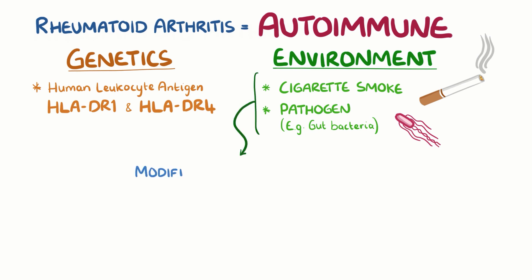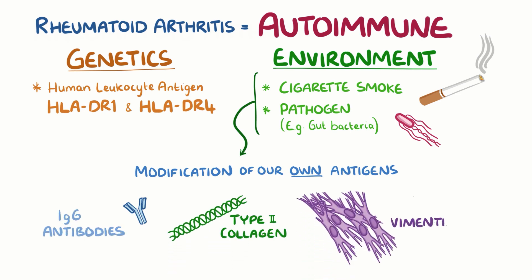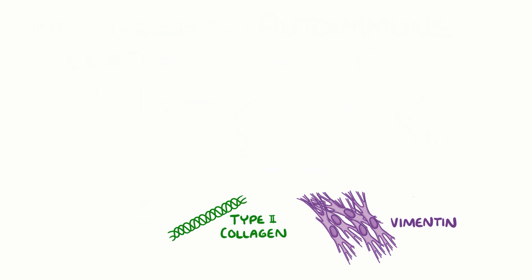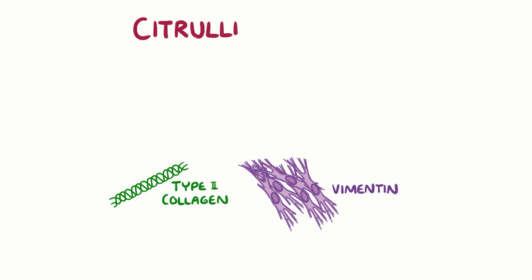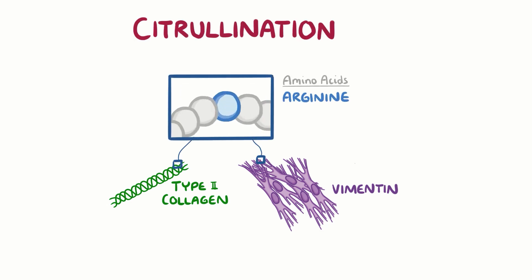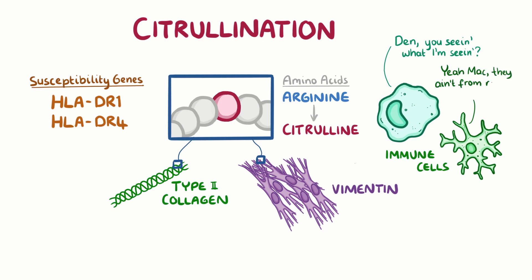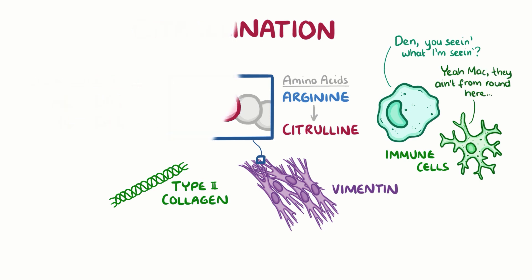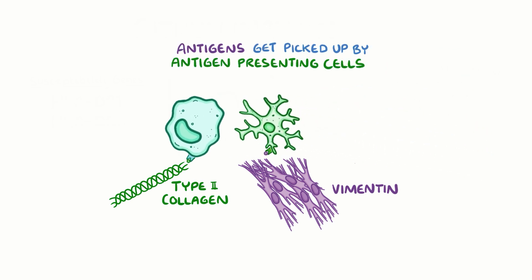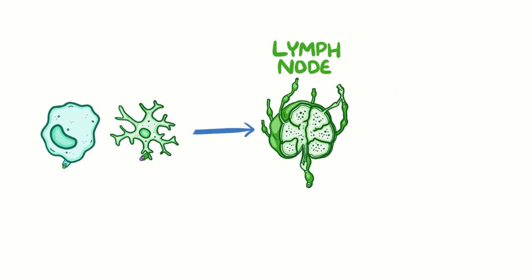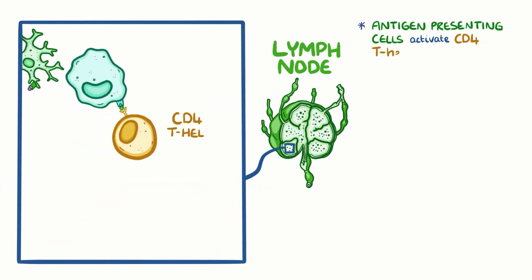These environmental factors can cause modification of our own antigens, such as IgG antibodies or other proteins like type 2 collagen or vimentin. Type 2 collagen and vimentin can get modified through a process called citrullination — that's when the amino acid arginine found in these proteins is converted into another amino acid, citrulline. Meanwhile, due to the susceptibility genes HLA-DR1 and HLA-DR4, immune cells can get confused by these changes and no longer recognise these proteins as self-antigens.